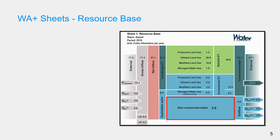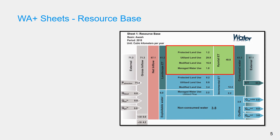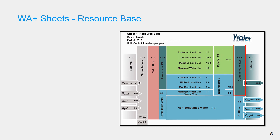The water consumed by evapotranspiration is divided into rainfall and incremental components. The landscape evapotranspiration is the sum of rainfall evapotranspiration of all land use types and incremental evapotranspiration of protected, utilized, and managed land use — this is the evapotranspiration occurring naturally. The consumed water is all water consumed by evapotranspiration, and the difference between net inflow and consumed water is the non-consumed water, which can be further divided into different types of outflows from the basin.